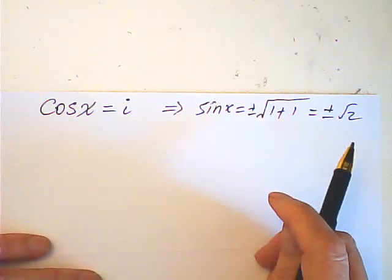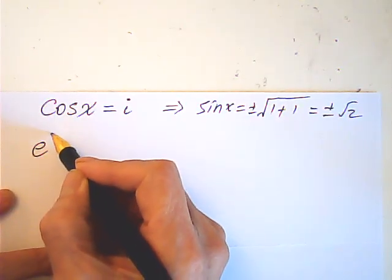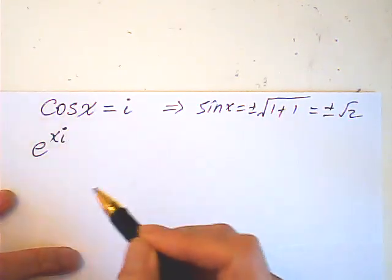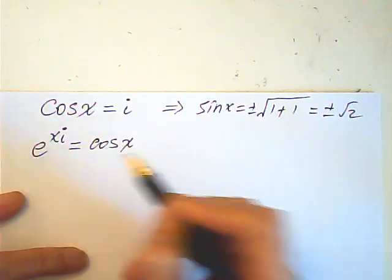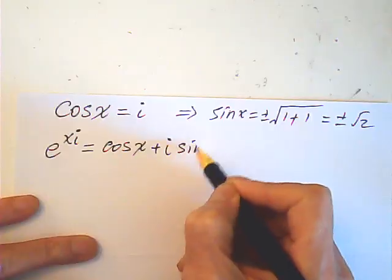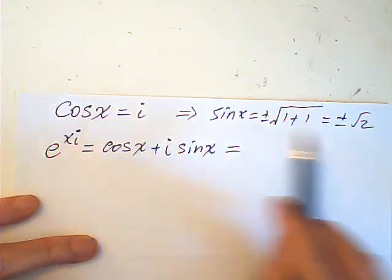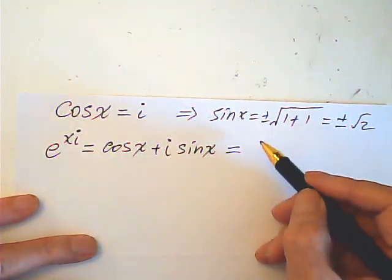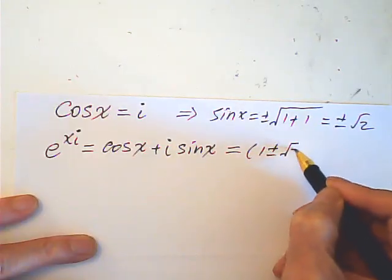Okay, then I use Euler's formula. e to the xi will be equal to cosine x plus i sine x. So, this is cosine, this is sine. So this is equal to 1 plus or minus root 2 i.